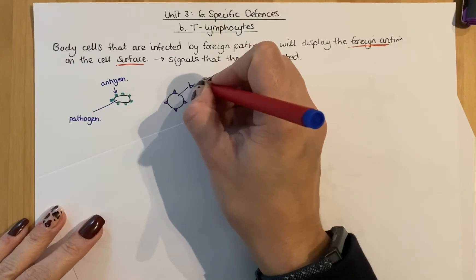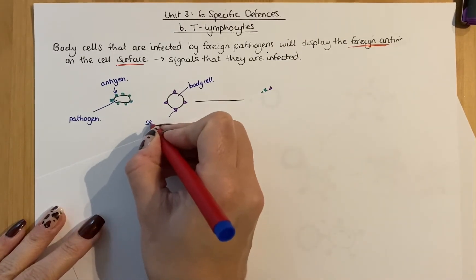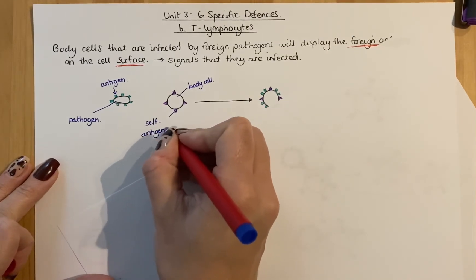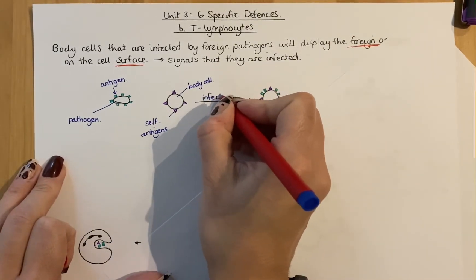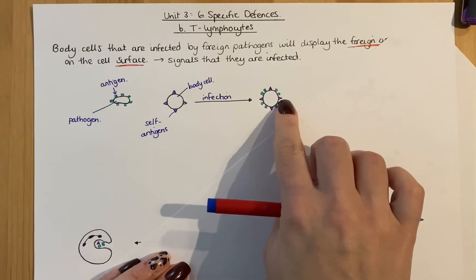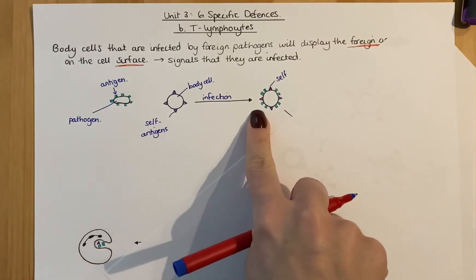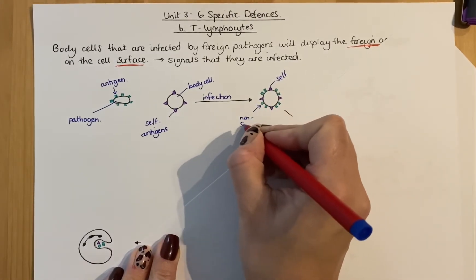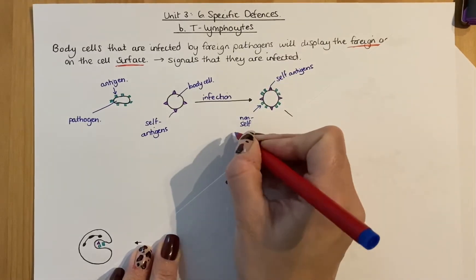This is a body cell, and these are its own antigens — so these are self-antigens. When a body cell gets infected, as this process is showing, it will have its own surface antigens, the purple ones, but it'll also display the non-self antigens from that pathogen. So the purple ones are self-antigens, and the green ones are non-self antigens.